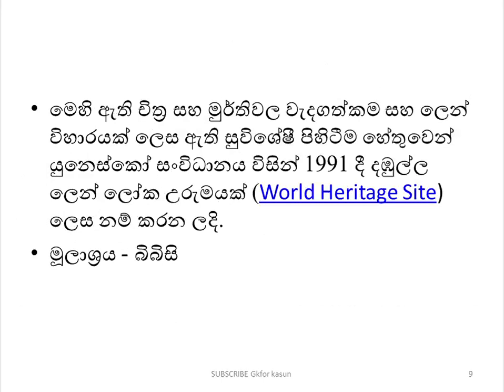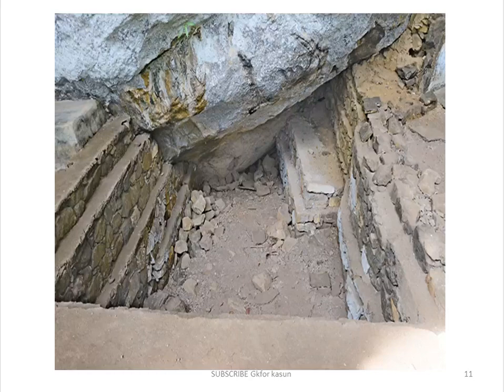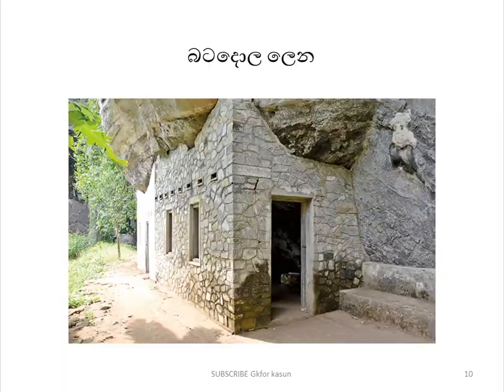The first place of the world heritage site is located in the U.S.C.P.T. In this case, the first place of the world is located in the U.S.C.P.T. This is the first place of the world heritage site.